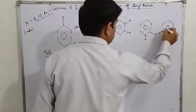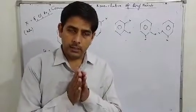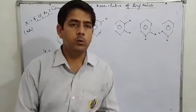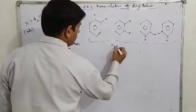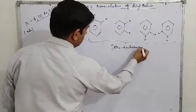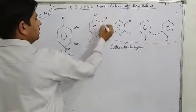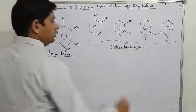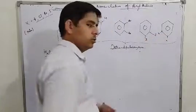As you can see on the benzene ring, when two halogens are on adjacent carbons (1,2 positions), it is called ortho — for example, ortho-dichlorobenzene.